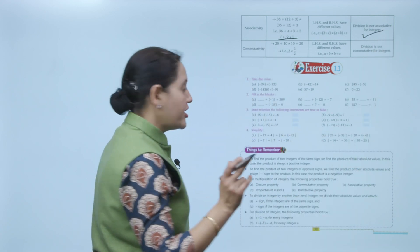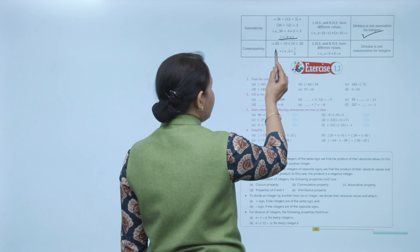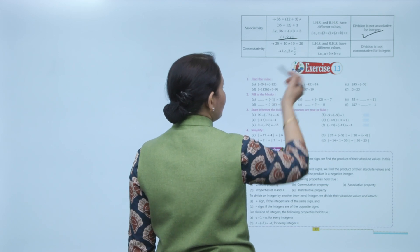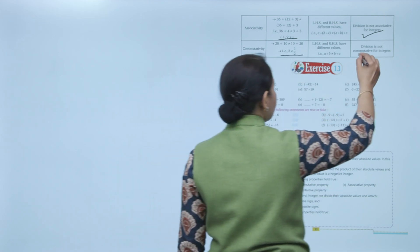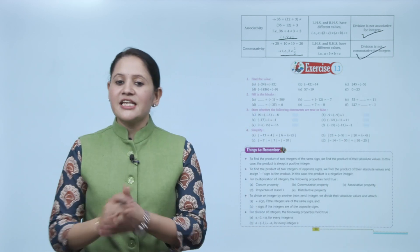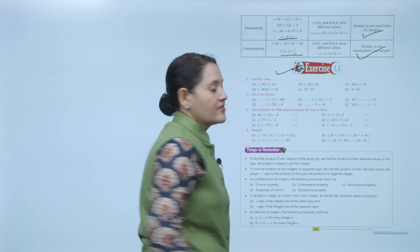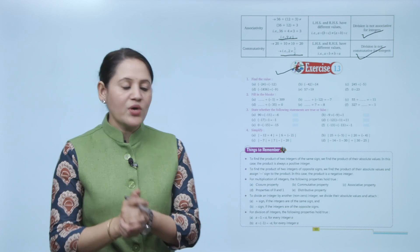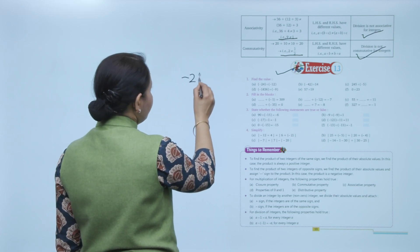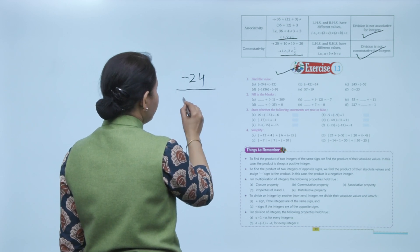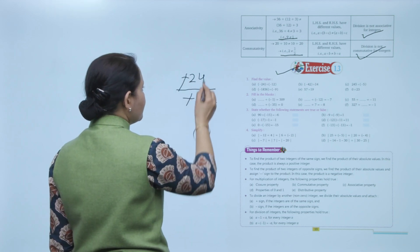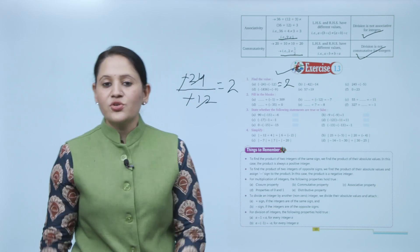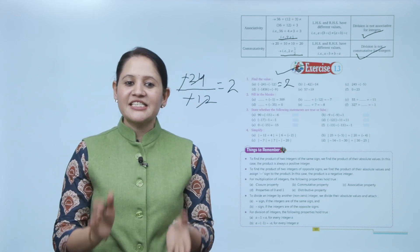For commutative property: 20 divided by 10 equals 2, but 10 divided by 20 equals 1/2 — both are not equal, so division is not commutative for integers. Next is Exercise 1.3. Find the value of minus 24 divided by minus 12: negative divided by negative cancels, and 12 twos are 24, so the answer is 2. You have to practice all the questions of this exercise.